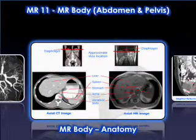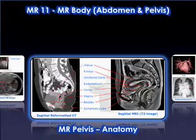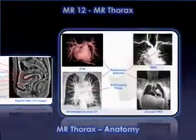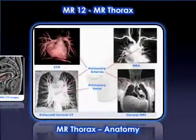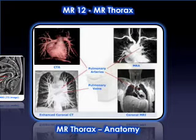MR Body will educate the participant on MR protocols for the abdomen and pelvis, including the MR appearance and characteristics of various abdominal and pelvic lesions. The 12th and final module is titled MR of the Thorax and will include the chest, heart, and spine.